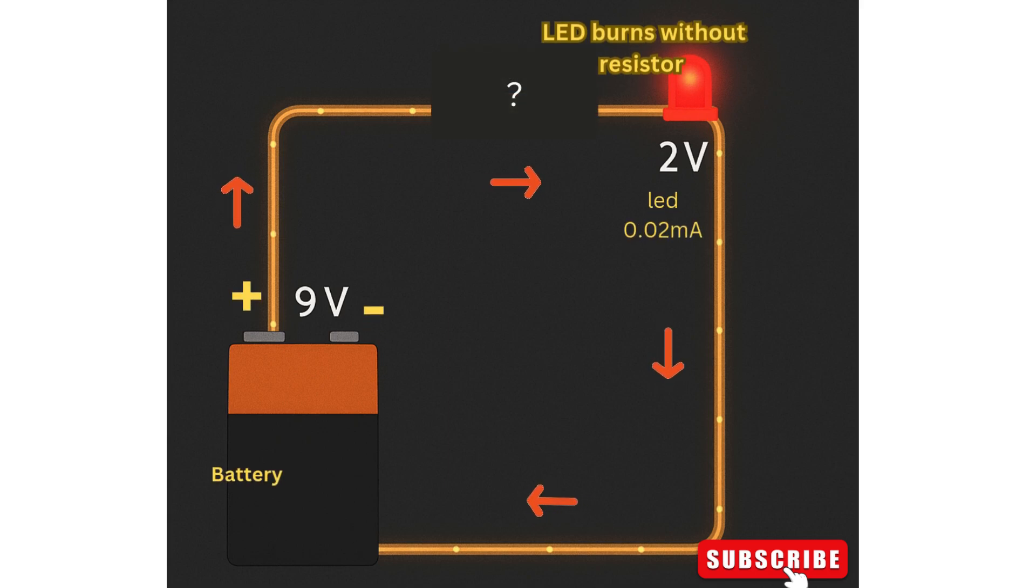Have you ever connected an LED directly to a 9V battery and seen it burn out immediately? That's because too much current is flowing through the LED.